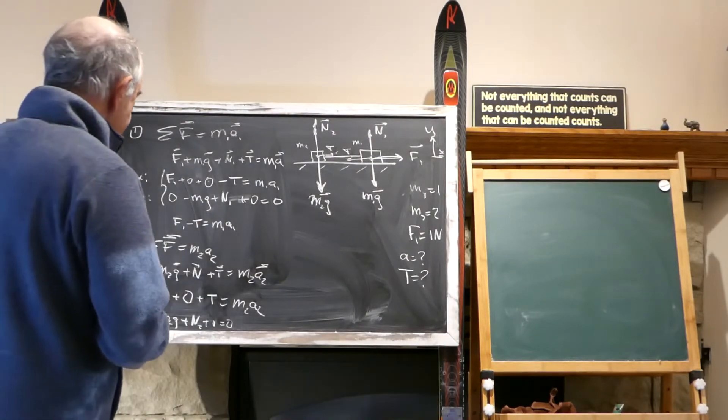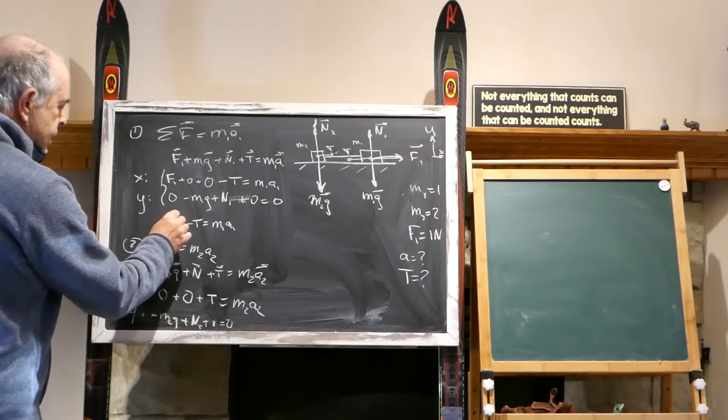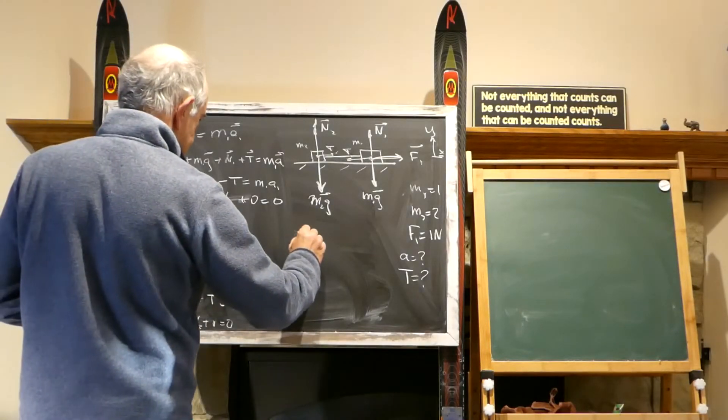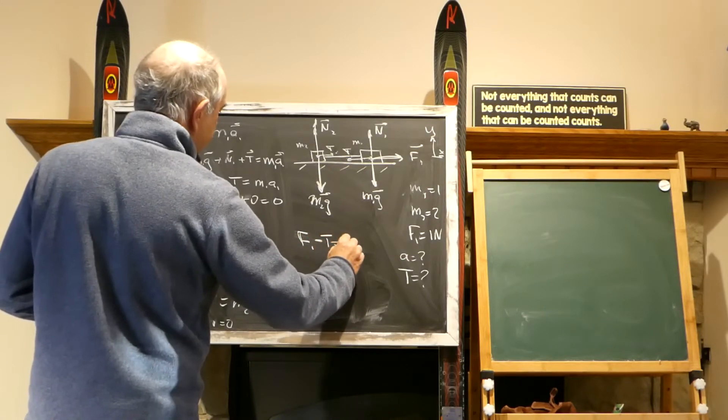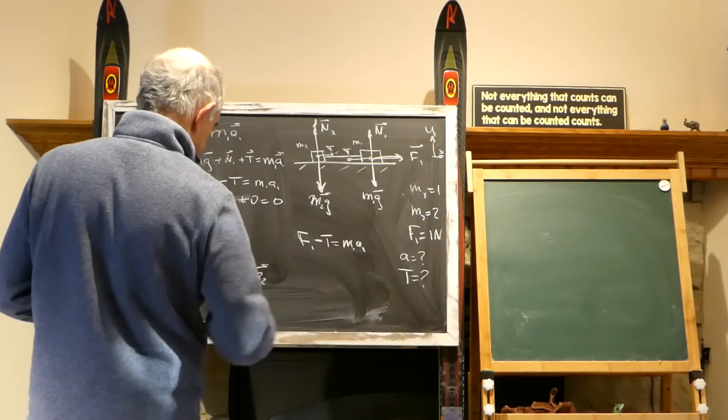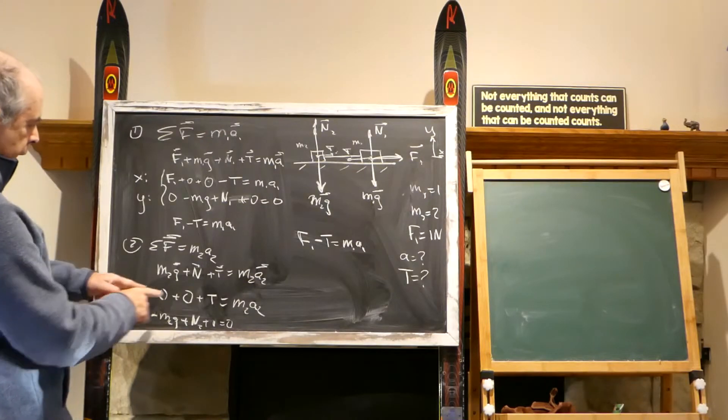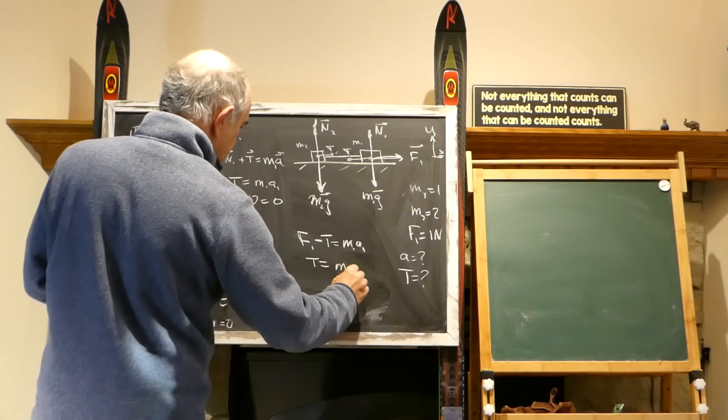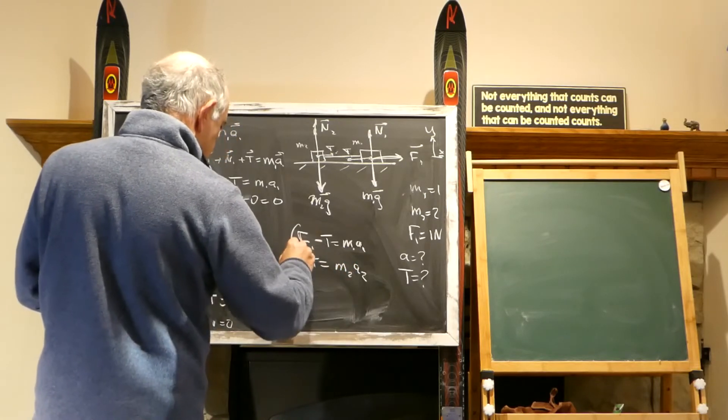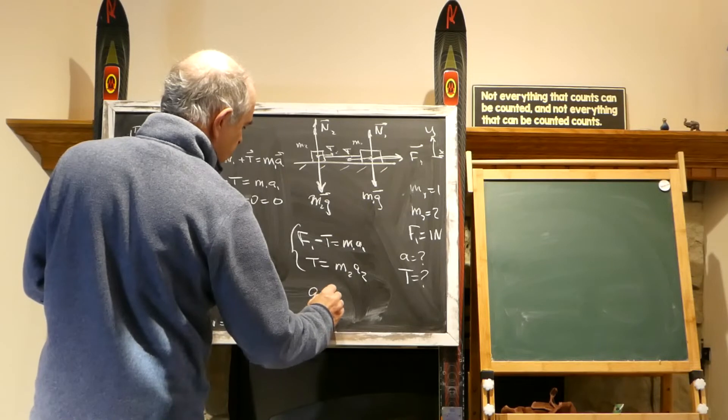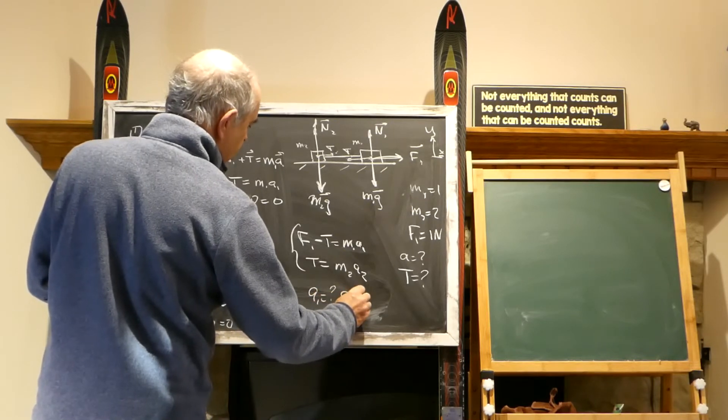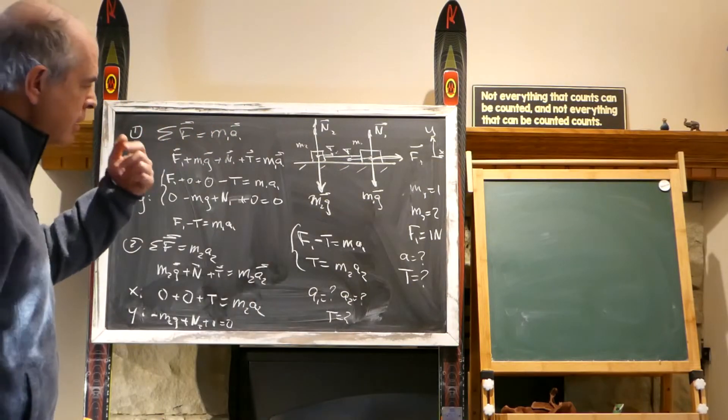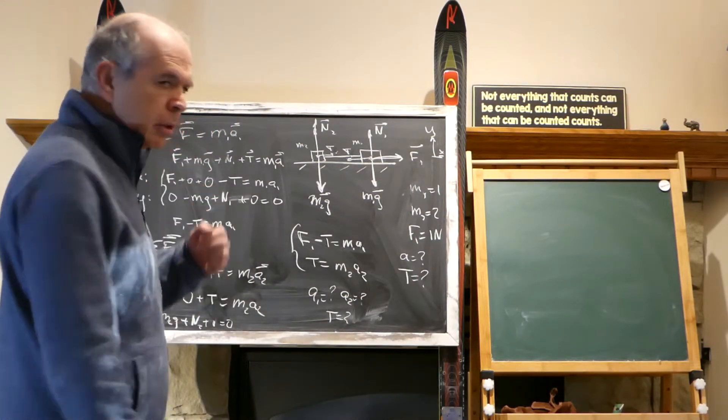We have two equations we'll be working with. Let's write them in a system: F1 minus T equals M1*A1, and T equals M2*A2. A1 is unknown, A2 is unknown, T is unknown. Three unknowns, two equations. How to deal with this?